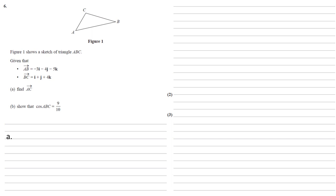Figure 1 shows a sketch of triangle ABC. Given that the vector AB equals minus 3i minus 4j minus 5k, and the vector BC equals i plus j plus 4k, we need to find the vector AC.